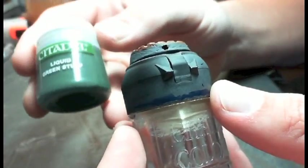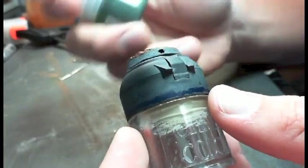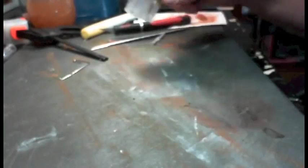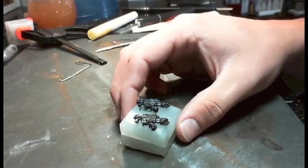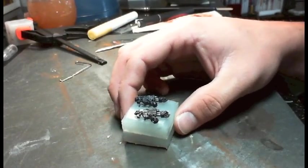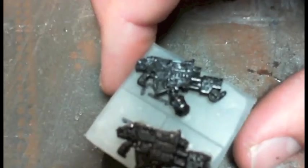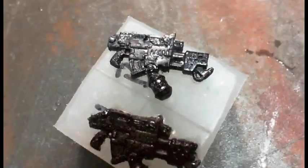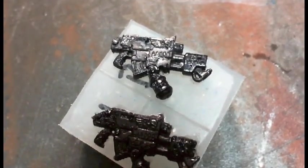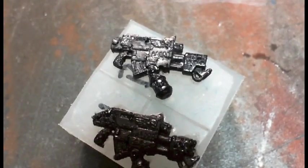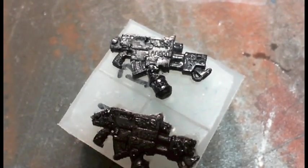Yeah. Like I said. Just a little bit of liquid green stuff or smooth surface filler and you're good to go. And here is our cast combi flamer on the bottom with our original bit on the top. I still have to clean the flash off. But pretty good.